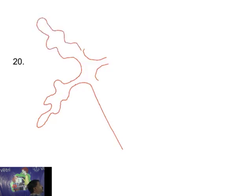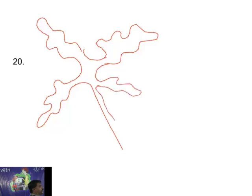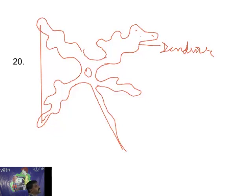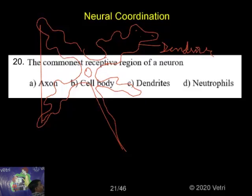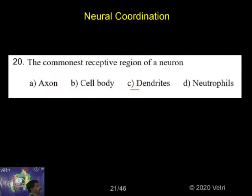For example, Dendrites represent the Neurons. These are the Dendrites. Dendrites help the Electrical Impulse to be transmitted from one Neuron to another Neuron. It is called Dendrites. Dendrites are found in the terminal branches and help transmit the Electrical Impulse. So, answer C — Dendrites is the correct answer. The Common Receptive Regions of Neurons — the answer is Dendrites.